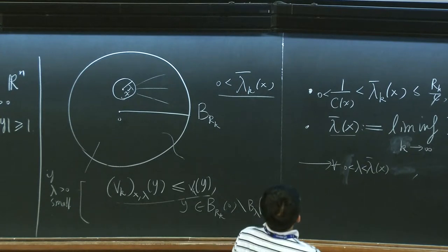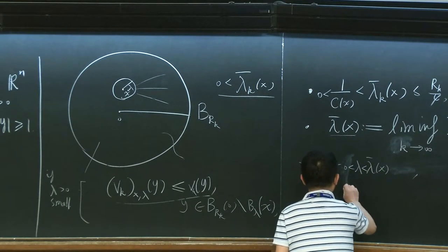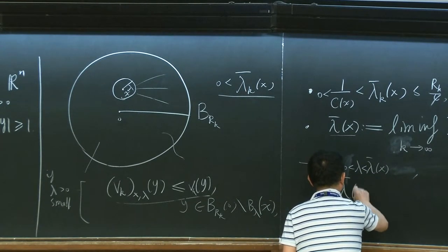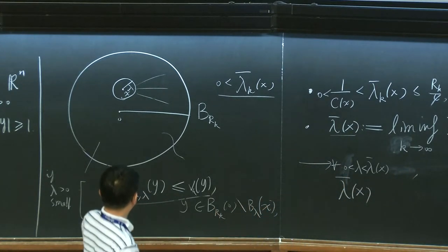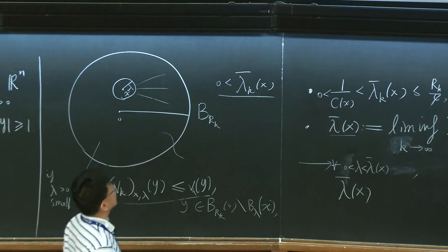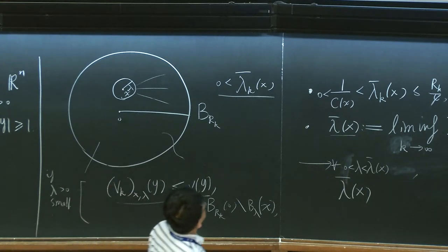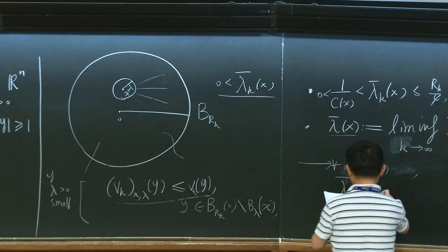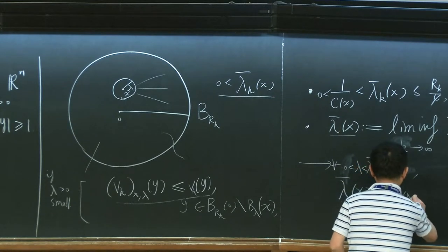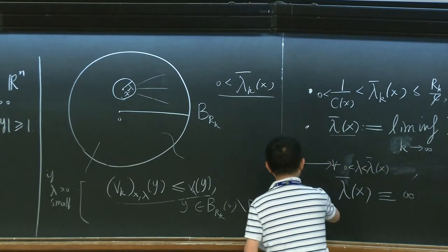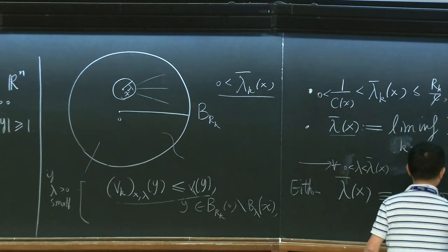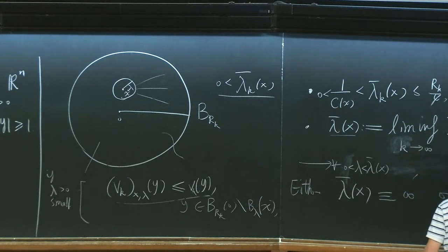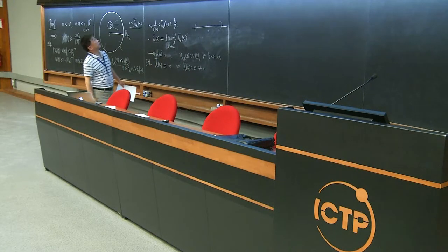We can only perform maximum principle arguments on VK, and somehow there is a limit process we are using. We are able to prove, by kind of a maximum principle argument and Hopf lemma performed on this VK solution, that either lambda bar is identically infinity or all finite.